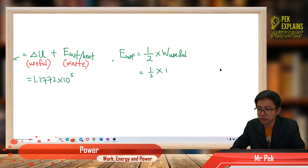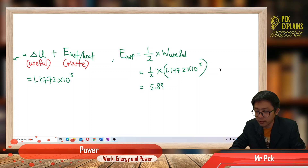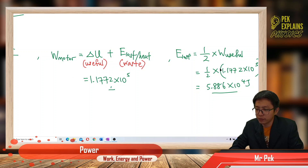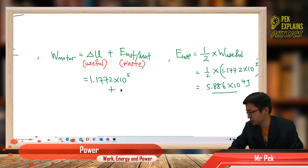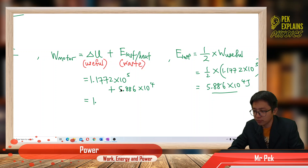The energy loss is half of the useful work done: 0.5 × 1.1772 × 10⁵ = 5.886 × 10⁴ joules. So the total work done by the motor is the useful work plus the energy lost: 1.1772 × 10⁵ + 5.886 × 10⁴ = 1.7658 × 10⁵ joules.